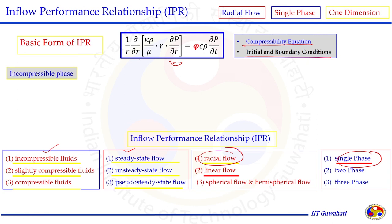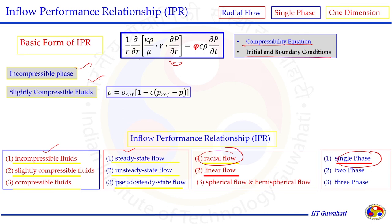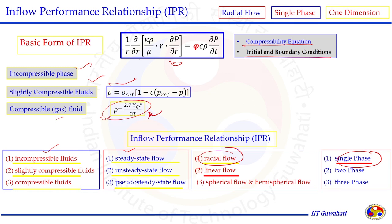The basic form of the IPR can also be used for different fluid properties and flow geometries. We consider single phase radial flow to get this basic IPR, which can be solved for different fluids and flow regimes. For incompressible phase the density is constant; for slightly compressible fluid the density takes a specific form; for compressible fluid like gas the density is replaced by ρ = 2.7·γ_g·P/z·T as discussed in the properties of natural gas.